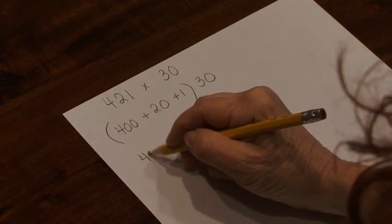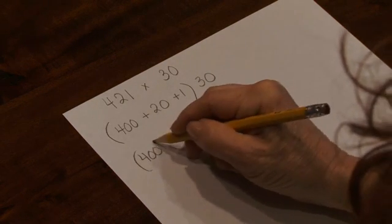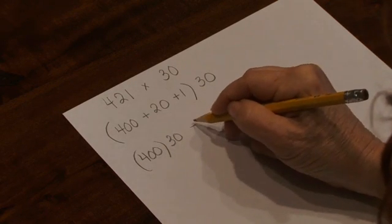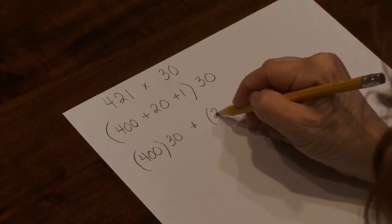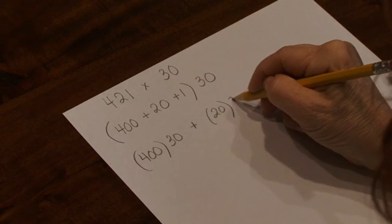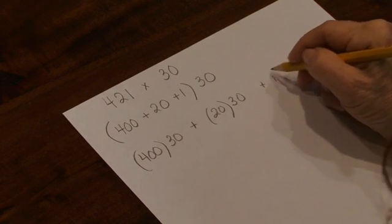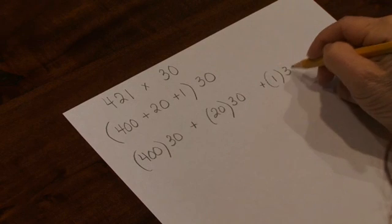We'll need to multiply 400 times 30 plus 20 times 30 plus 1 times 30.